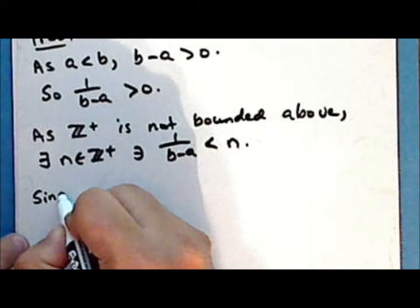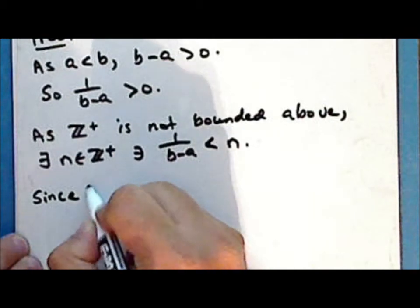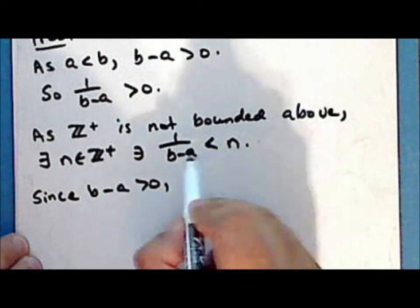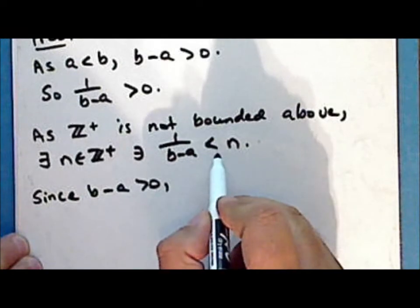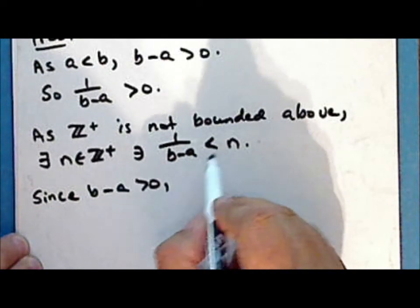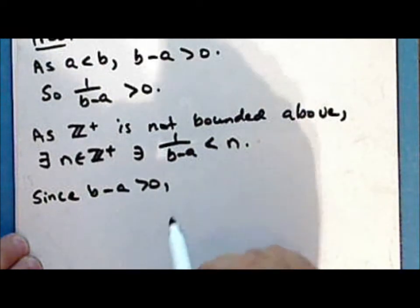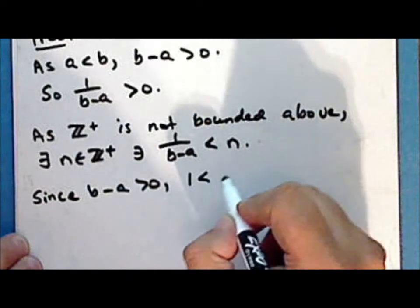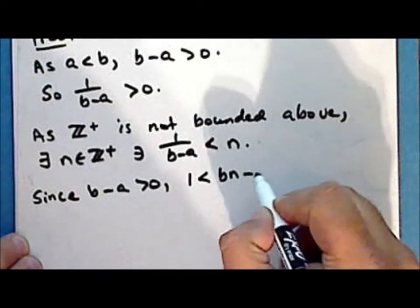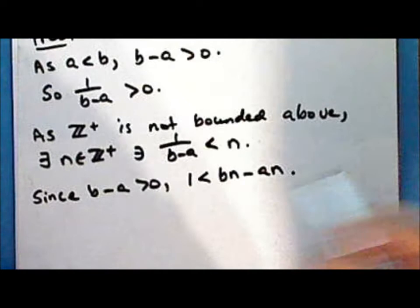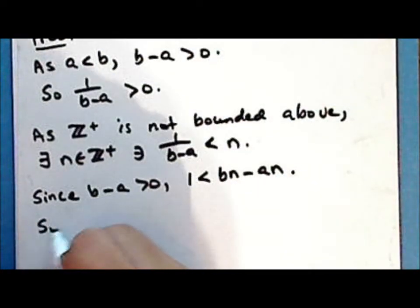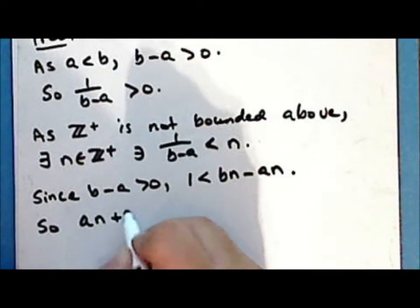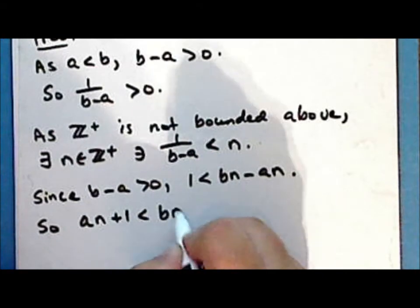Now since B minus A is positive, we can multiply through the inequality by B minus A without changing the inequality, so that we have 1 is less than B times N minus A times N, and so A times N plus 1 is less than B times N.